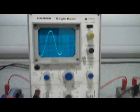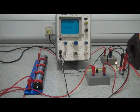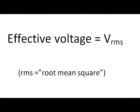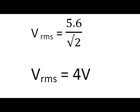So 5.6 volts peak is producing the same effect as 4 volts DC. So we need to have an effective voltage for our AC voltage. We call that the RMS voltage. It's the peak voltage divided by root 2. So 5.6 divided by root 2 gives us our effective voltage of 4 volts, same as the DC.